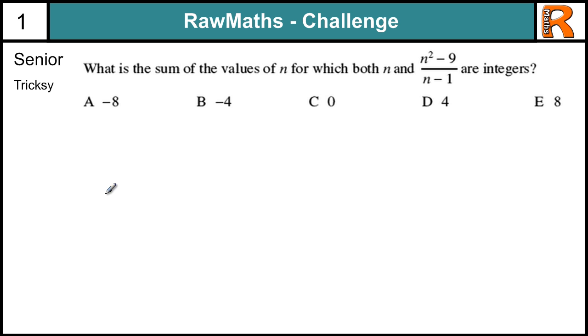Solution to the senior tricksy question on raw maths challenge 1. Okay, so we've got to try and work out the sum of the values of n that make these two statements integers. Now, obviously n can be any integer, but this thing here is a bit complicated. So what we need to do is realize that n minus 1 goes into n squared minus 9, and do a bit of polynomial division. So if we do work out what we've got to times n minus 1 to get n squared, well that's n. n lots of n is n squared, n lots of minus 1 is minus n. Subtract those two, just like we were doing an ordinary division, and we end up with n, because we've taken away minus n. Bring the 9 down.